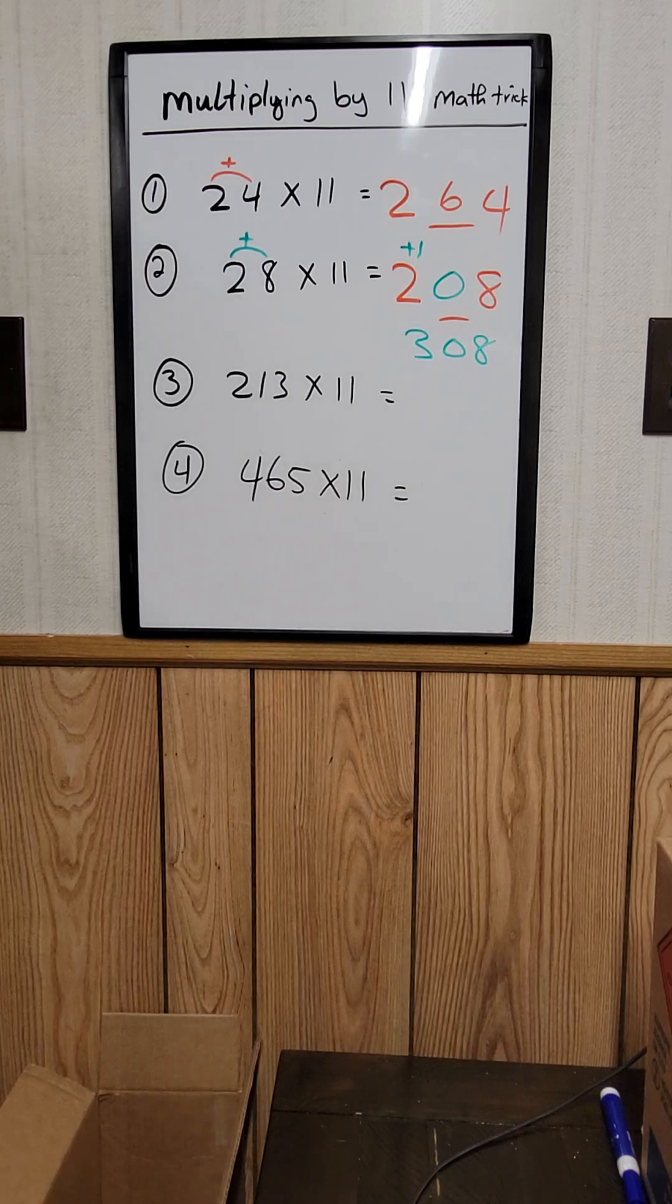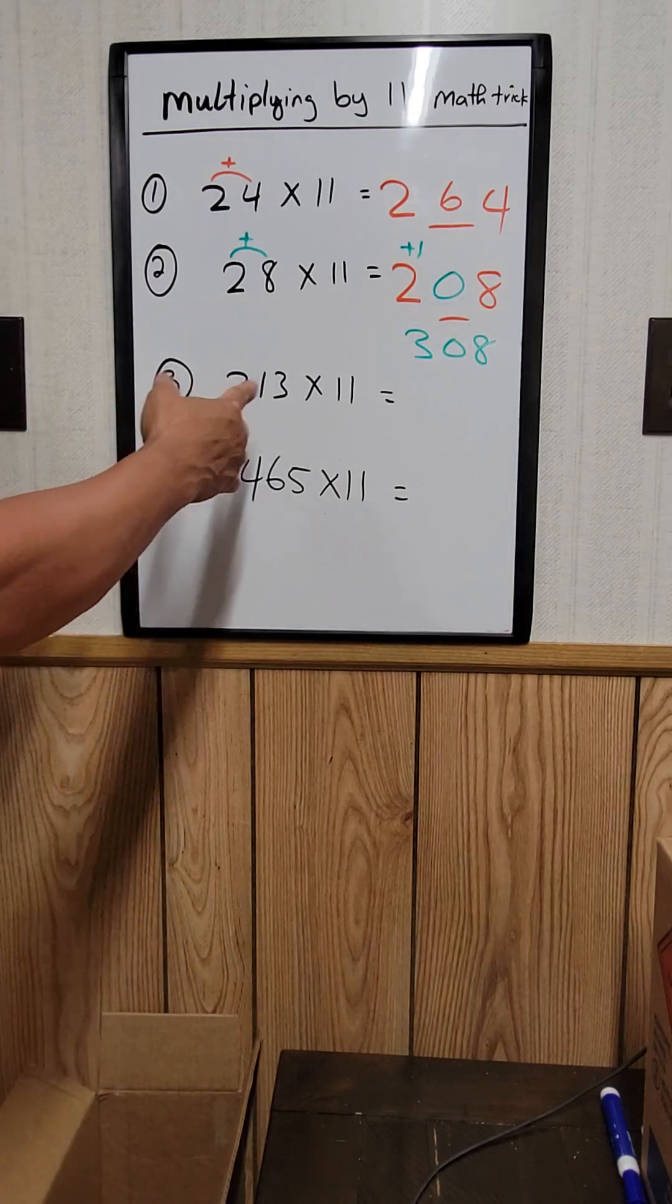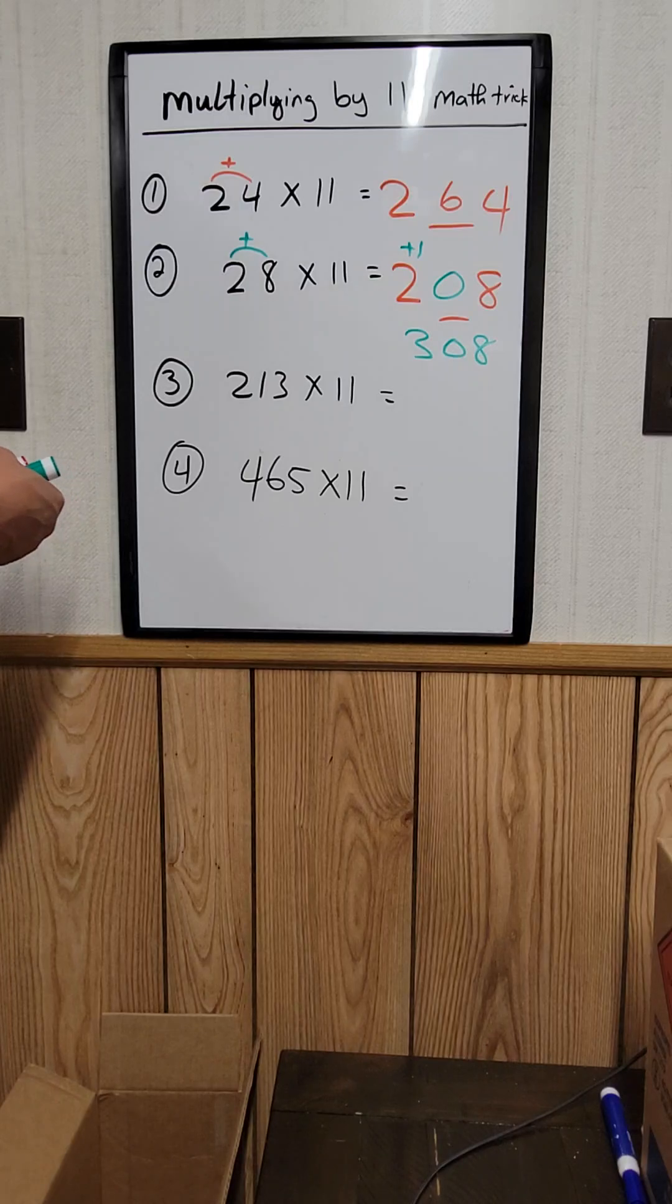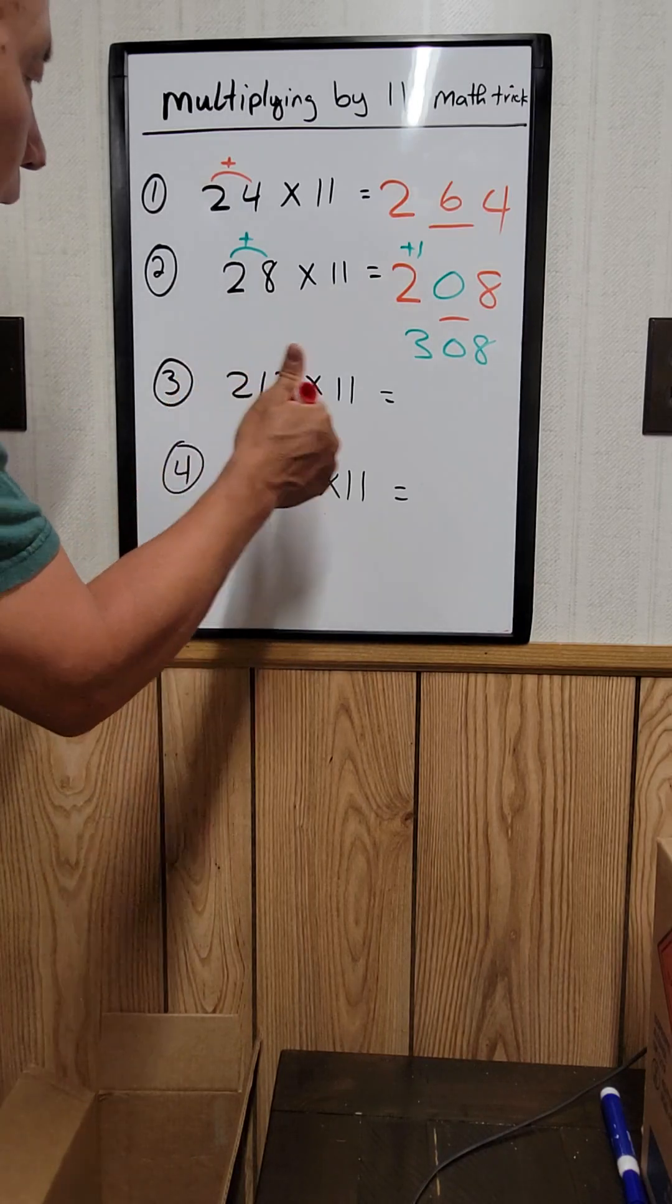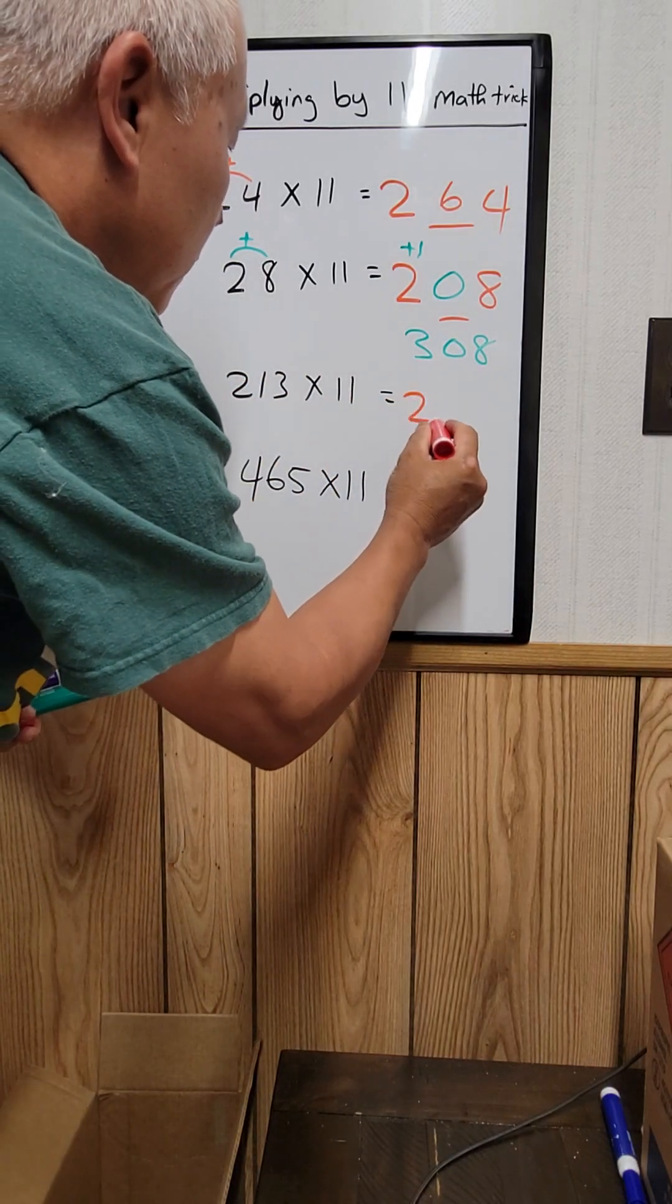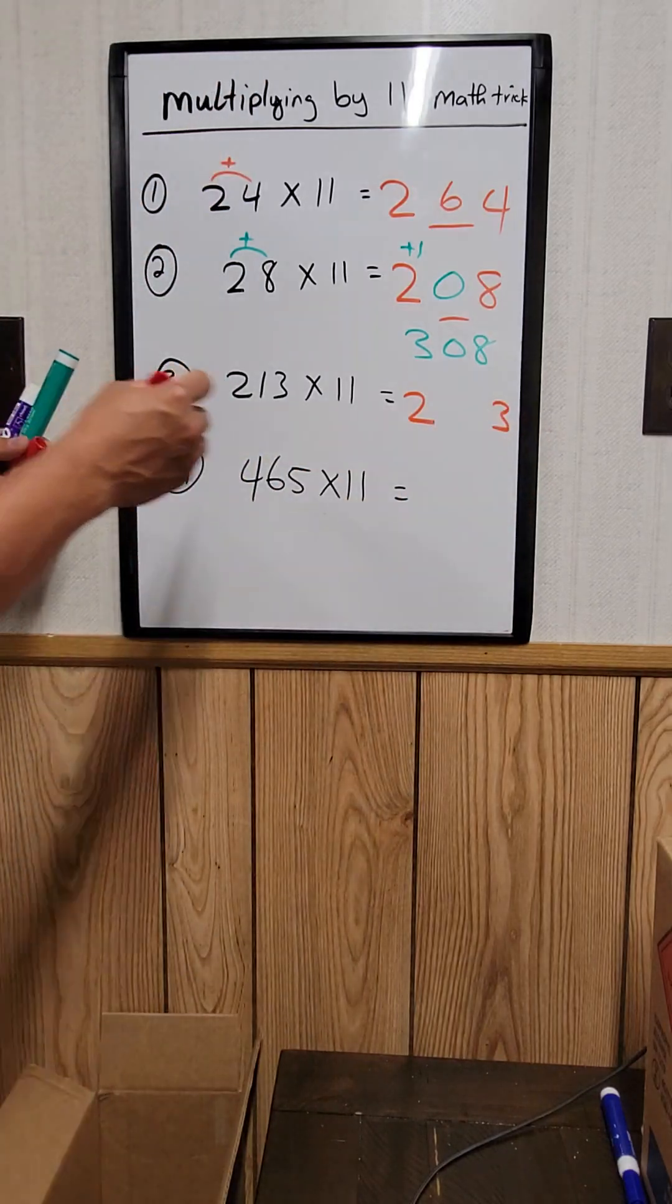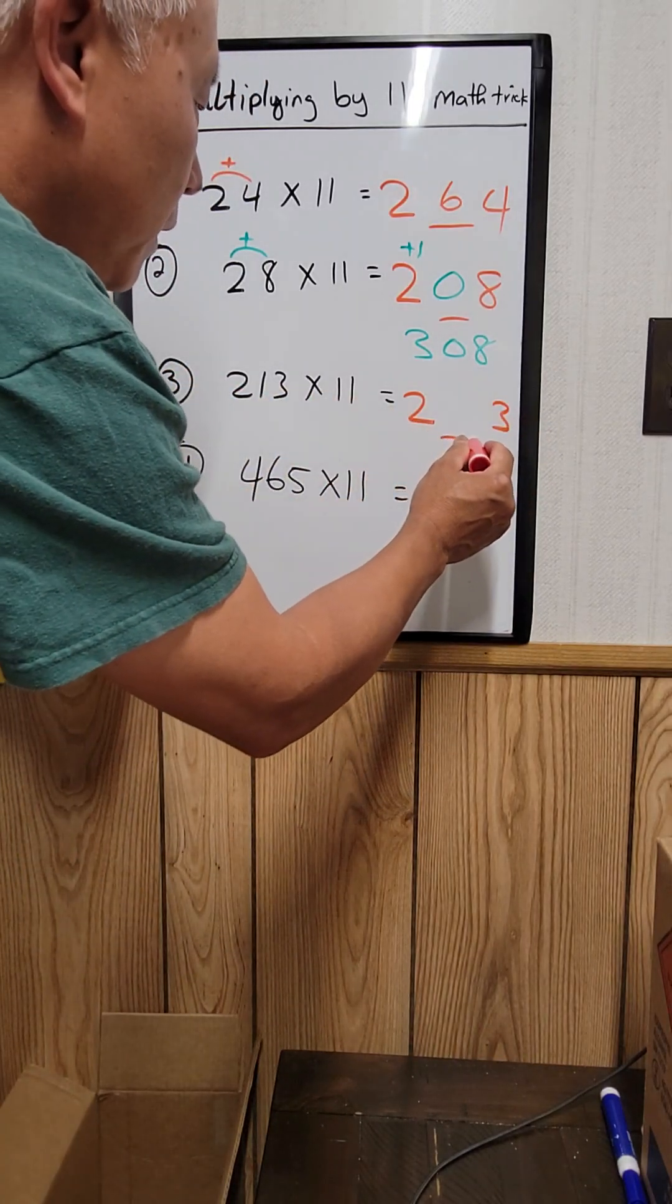Okay, let's try this one. 3 digits times 11. So 213 times 11. Do the same thing. 2 and 3 right here. And there's 2 middle numbers right here. 1, 2. Okay.